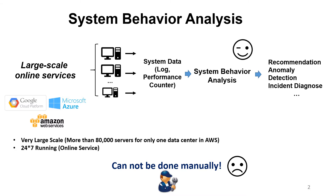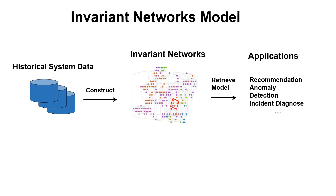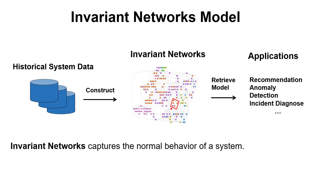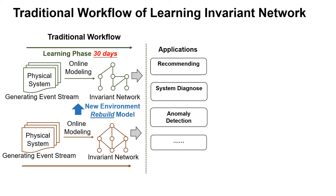The recently proposed environment network model is a state-of-the-art method for system behavior analysis. The environment network model is a network which represents the environment information of a system. An environment network is a heterogeneous weighted network that captures the normal behavior of the system. Environment networks are constructed by continually analyzing the historical system data for a long time before deploying to the real-world system.